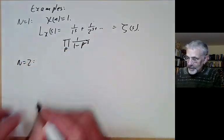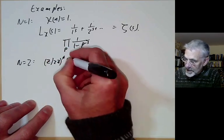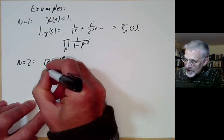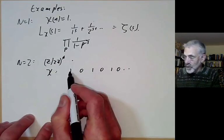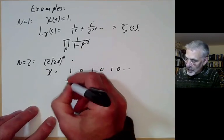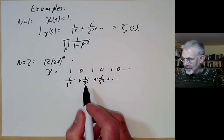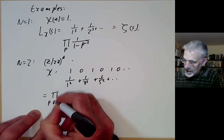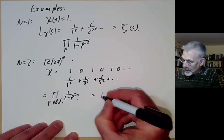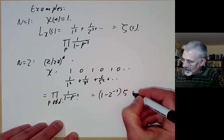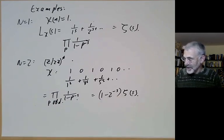For n equals 2, Z modulo 2Z star has just one element, so there's only one possible chi, which goes 1, 0, 1, 0, 1, 0 — that is, chi is 1 for n odd and 0 for n even. We get the series 1 over 1 to the s plus 1 over 3 to the s plus 1 over 5 to the s and so on. This isn't really a new function — it equals a product over all odd primes of 1 over 1 minus p to the minus s, which is just 1 minus 2 to the minus s times zeta(s). It just differs from the Riemann zeta function by an elementary factor.